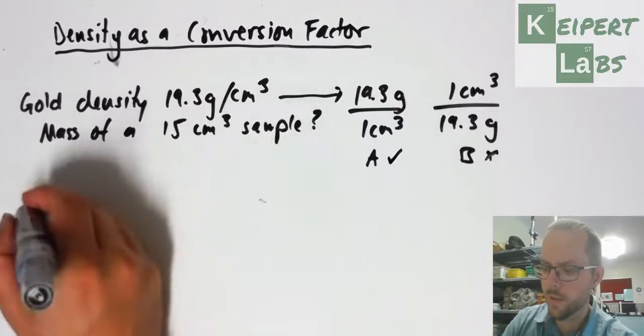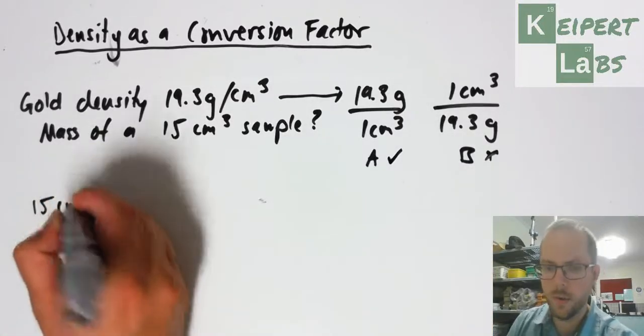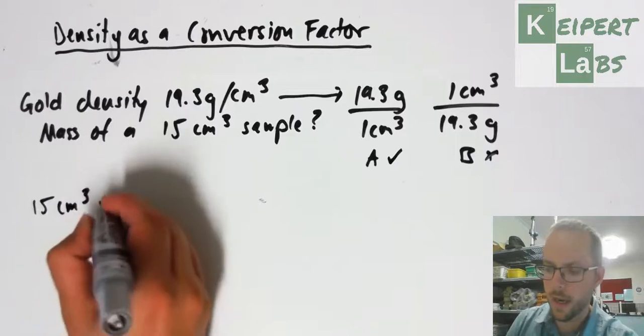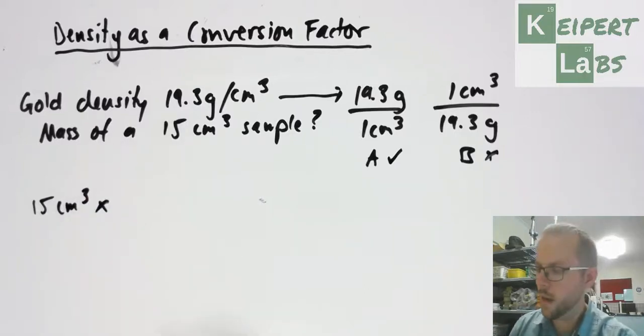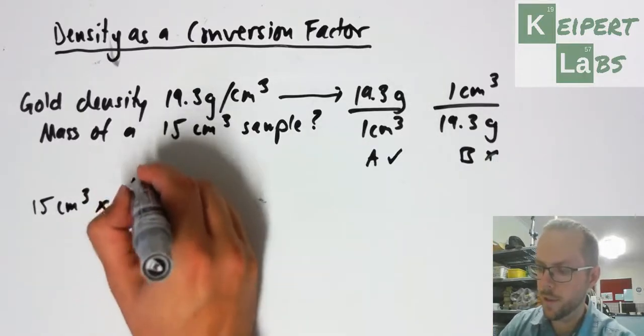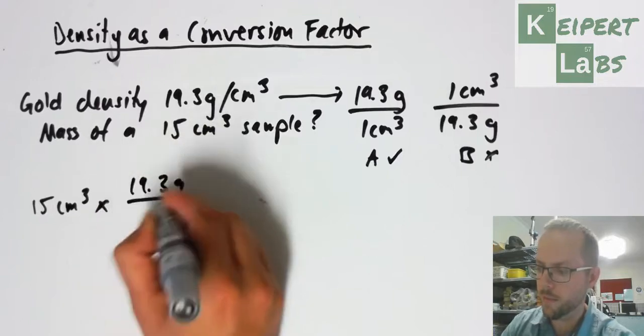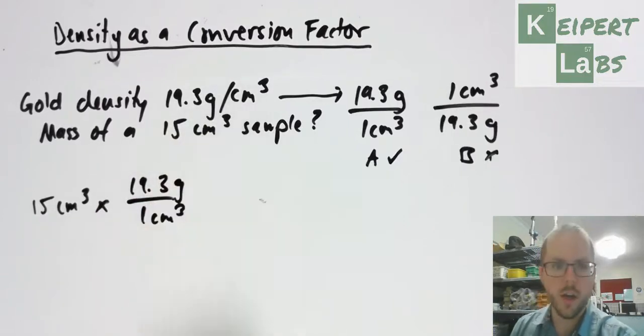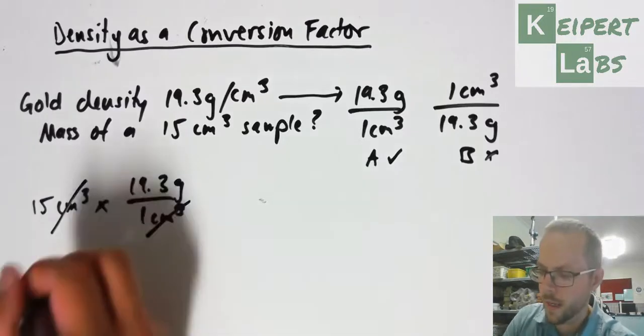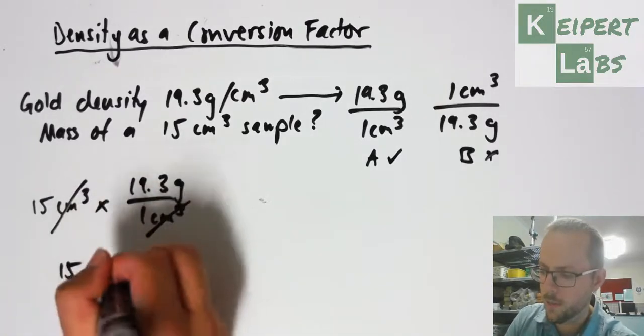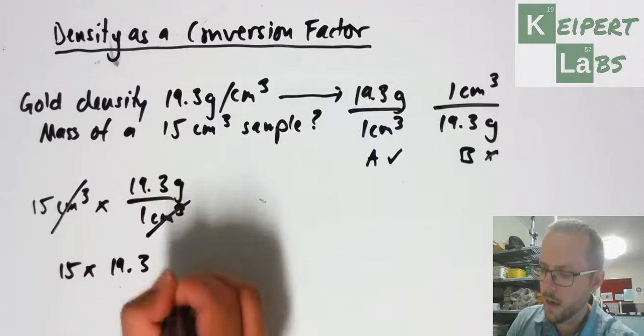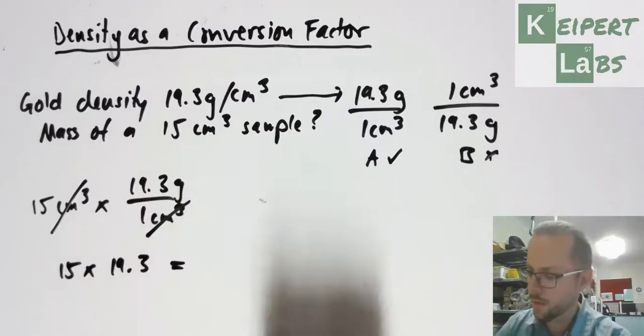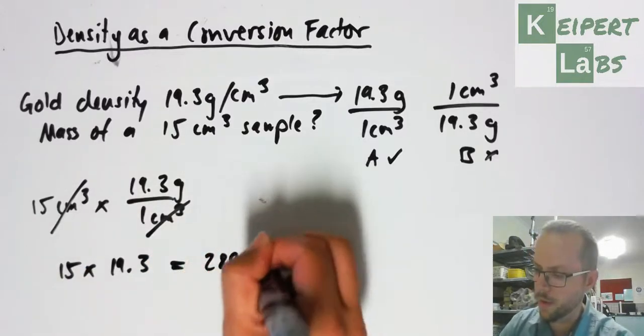I have a 15 cubic centimeter sample of gold, and I'm going to multiply that number by the conversion factor - 19.3 grams for every one cubic centimeter. These units of cubic centimeters cancel out, and we end up with units of grams. In my calculator, I type 15 times 19.3, and I get a value of 289.5 grams.